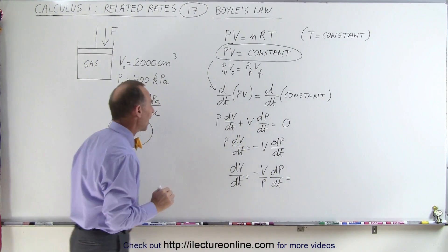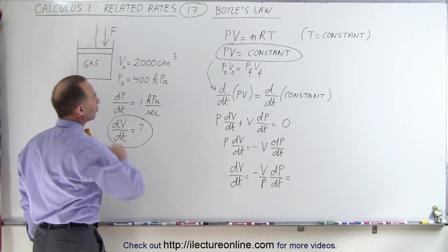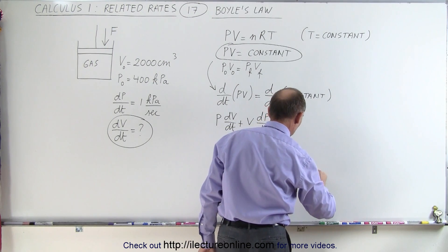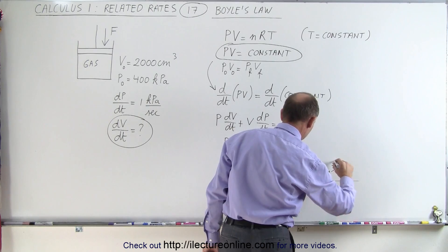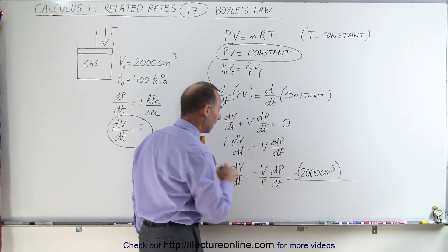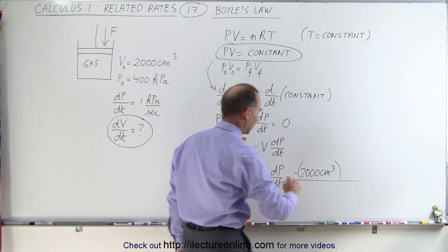Now we can plug in everything that we have. The original volume, or the volume at this moment in time, is 2,000 cubic centimeters. So that's minus 2,000 centimeters cubed, so we can't forget the negative, divided by P, the pressure, which is 400 kilopascals.